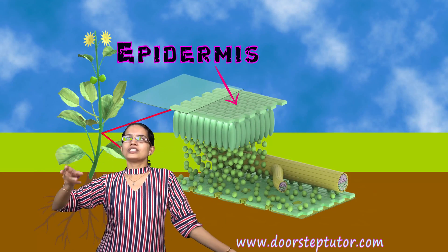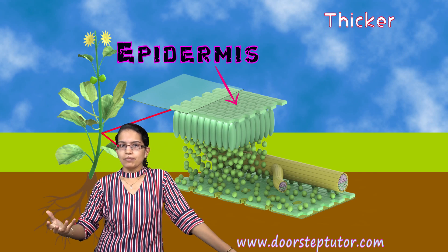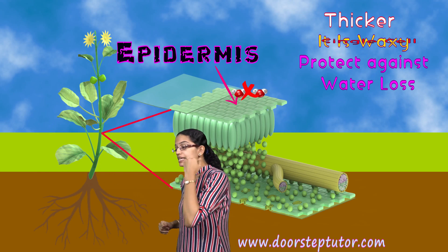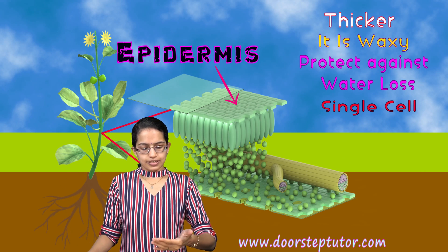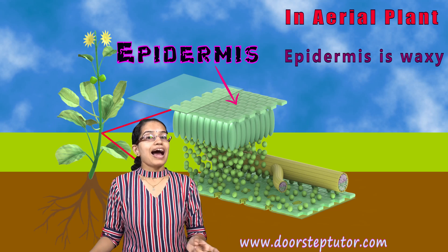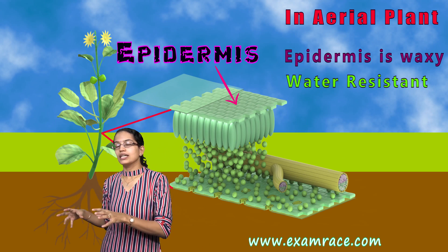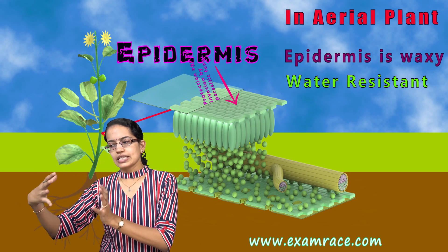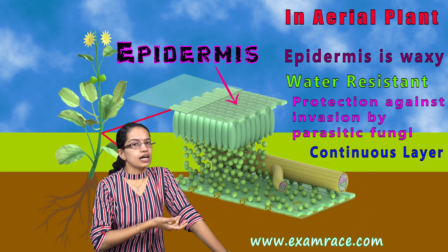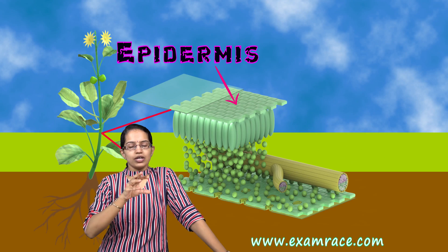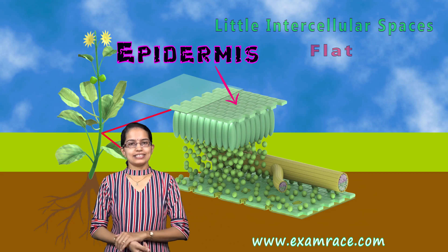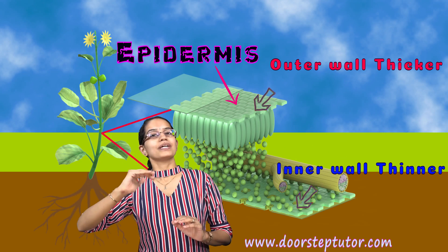Coming on to epidermis: epidermis is usually thicker in cases of dry climate because it is waxy — it prevents water loss from the plant. It is single-celled. For an aerial plant, the epidermis would be waxy and water-resistant, providing protection against loss of water and against invasion from any fungal or parasitic infection. It is a continuous layer across the surface with little intercellular spaces, and the cells are flat. A very important characteristic is that the outer walls are thicker as compared to the inner walls.